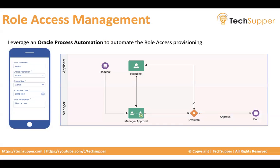As part of this video I am going to show how we leverage Oracle Process Automation to automate role access provisioning. For example, somebody joins the organization and needs access to various applications. The request should be approved by a manager, and the user must have an interface to raise the request. Once they submit, it calls process automation, the manager is notified, and upon approval, SaaS APIs can be called to provide role access.